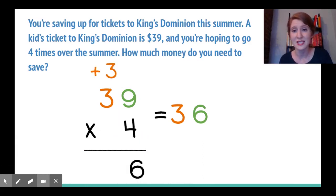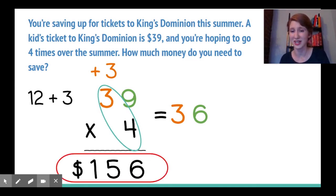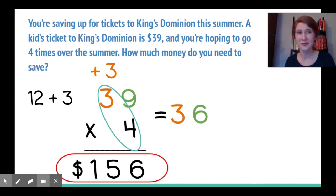In the tens place, three times four equals twelve plus three, and twelve plus three gives us fifteen tens, so I'll even go into the one hundreds place. How much money do you need to save? One hundred fifty-six dollars. Now how are you going to save that, and is King's Dominion even going to be open for us to visit this summer?